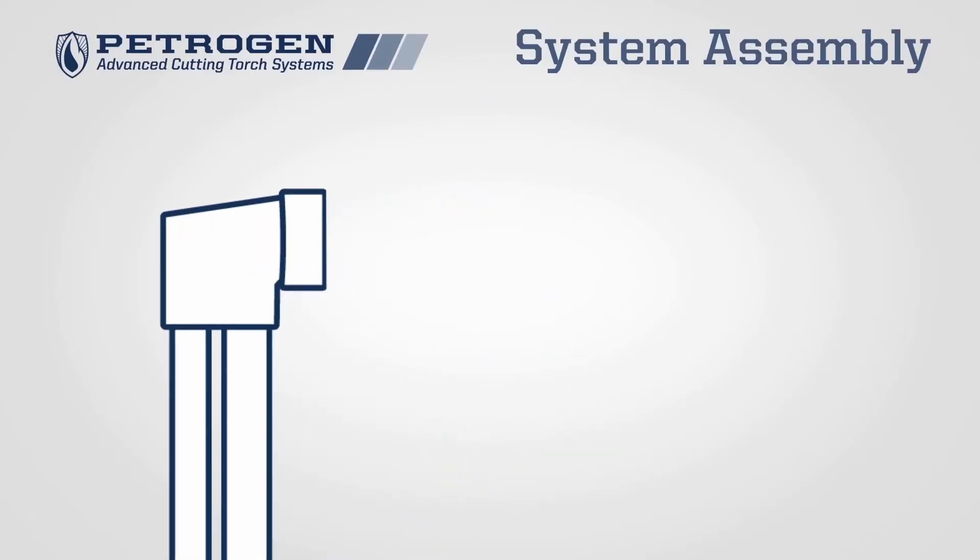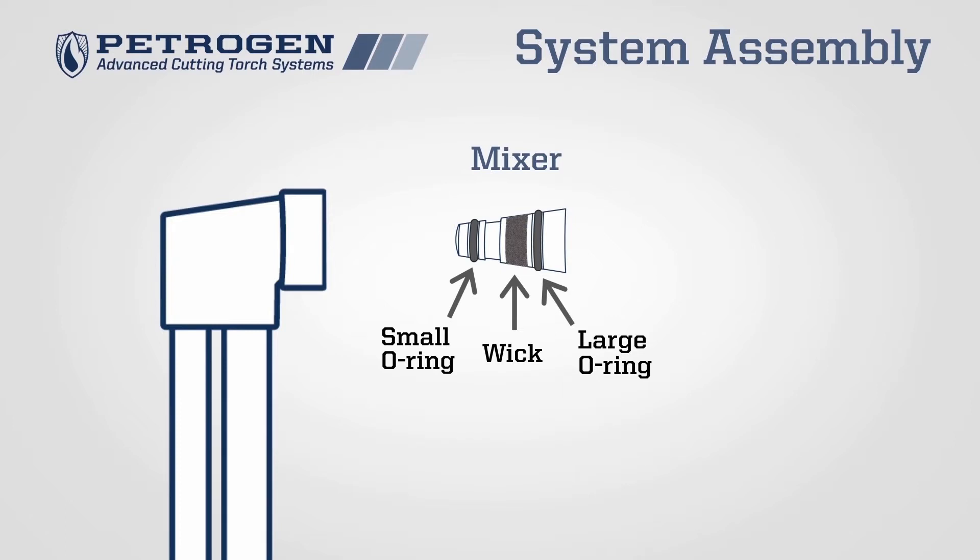Inside the head of the torch is the mixing unit. It's important to know about this piece of equipment because it may need maintenance if the torch is overheated. It's comprised of a small O-ring, wick, large O-ring, and mixer body.